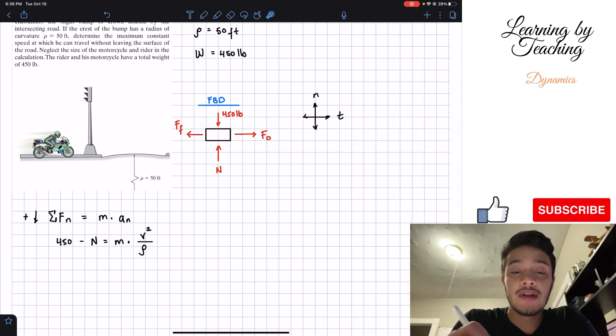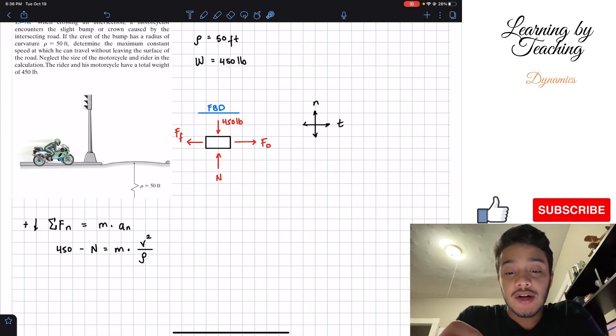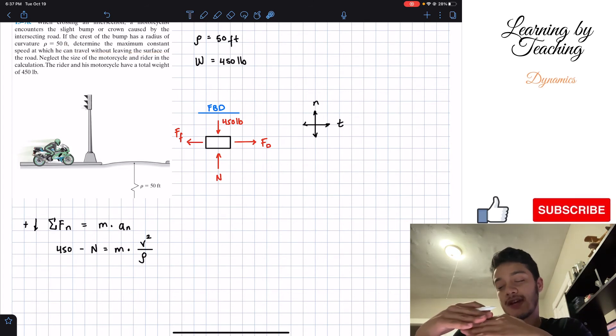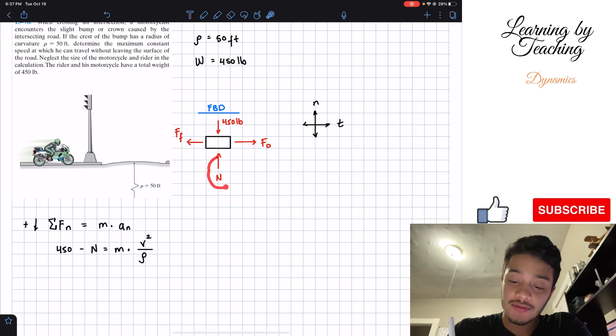What we need to account for is that we are determining the maximum speed at which he can travel without leaving the surface. So at a microsecond before leaving the surface, that means that my tires are starting not to touch the road, and our normal force should be equal to zero. Therefore, this normal force is equal to zero.